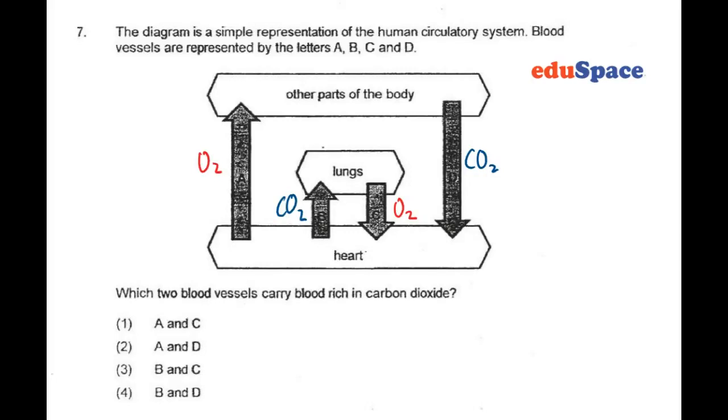In question 7, we have a representation of a human circulatory system. In this case, I have indicated the amount of oxygen as well as carbon dioxide in each part.